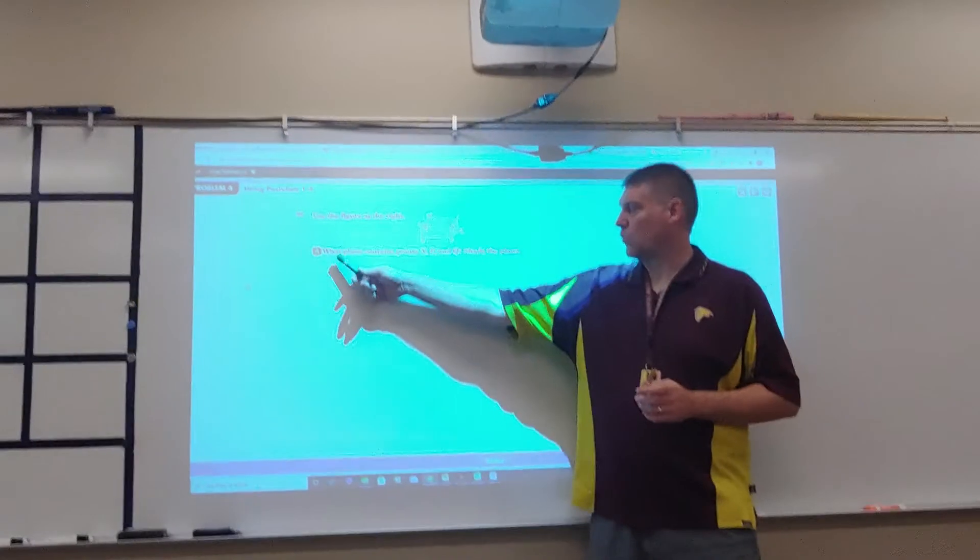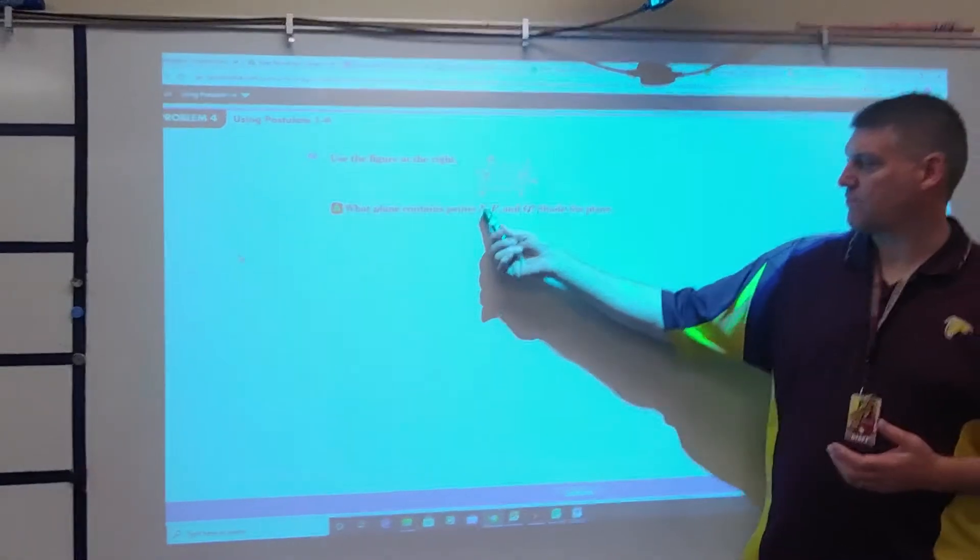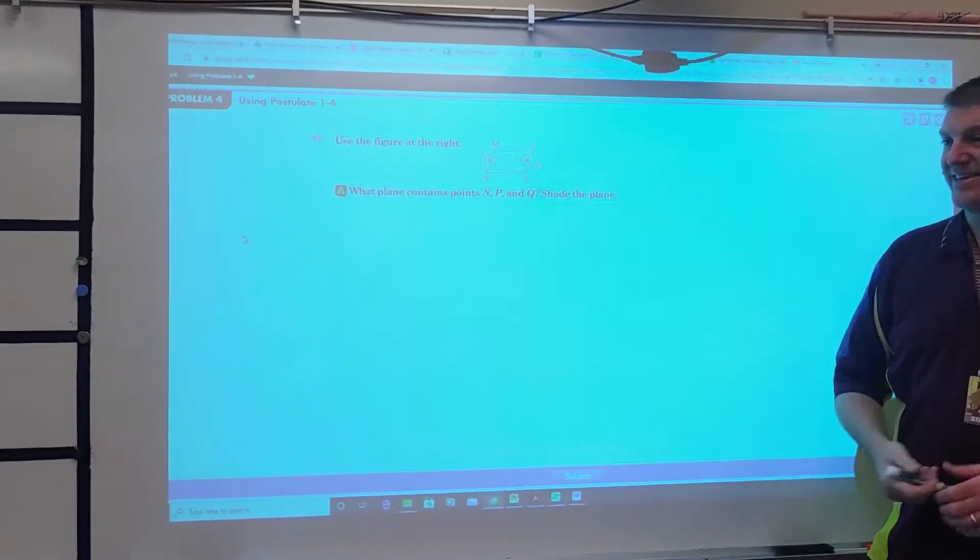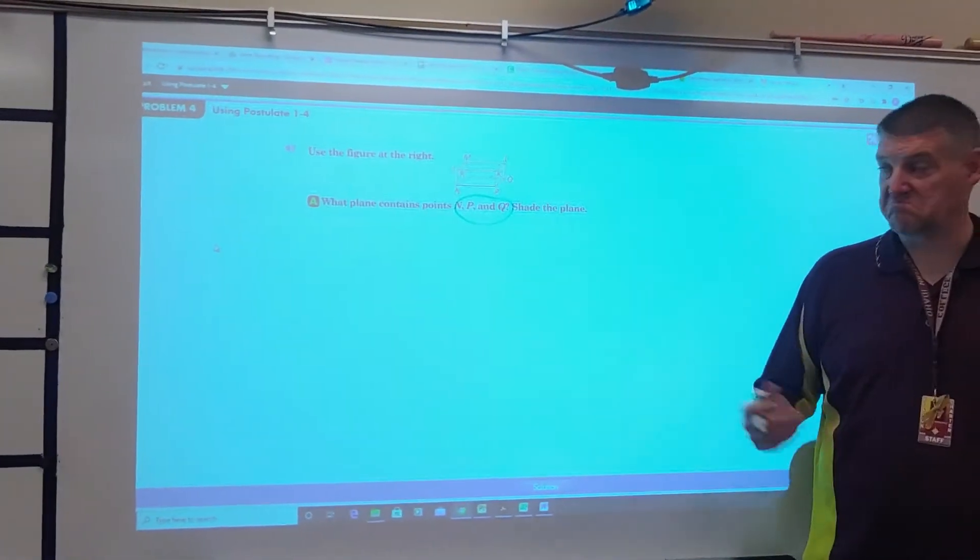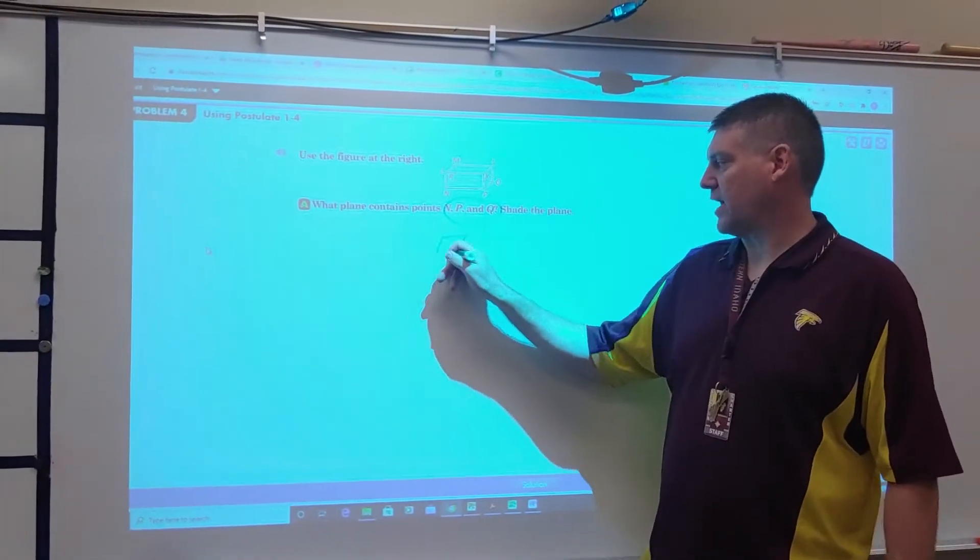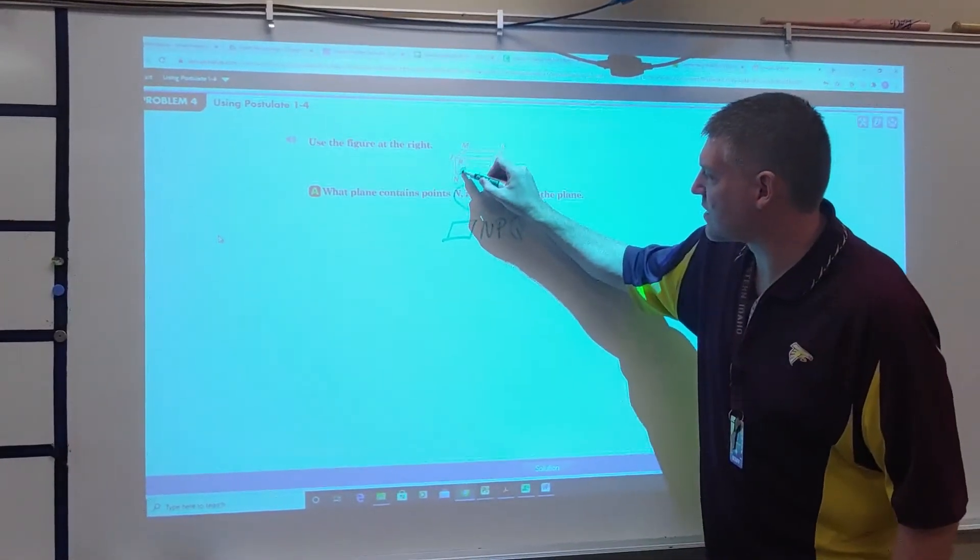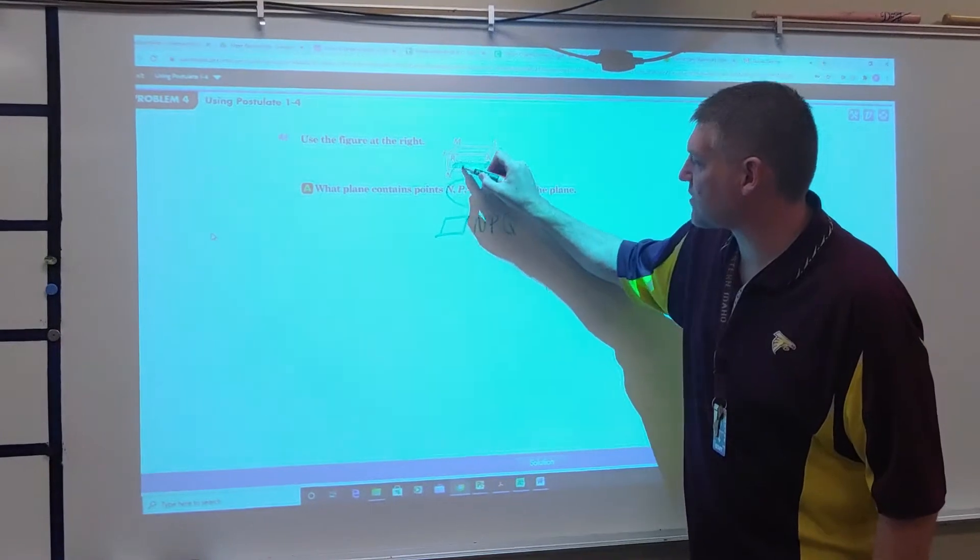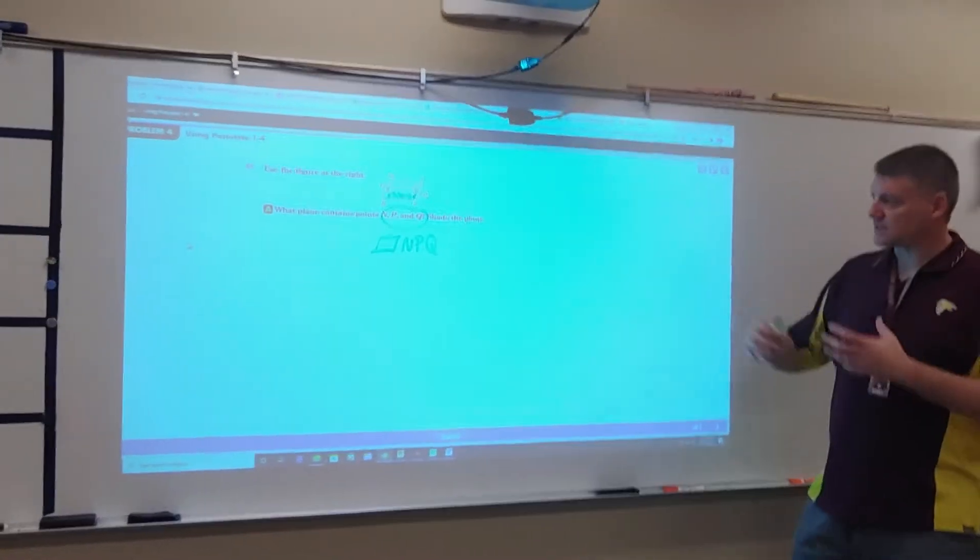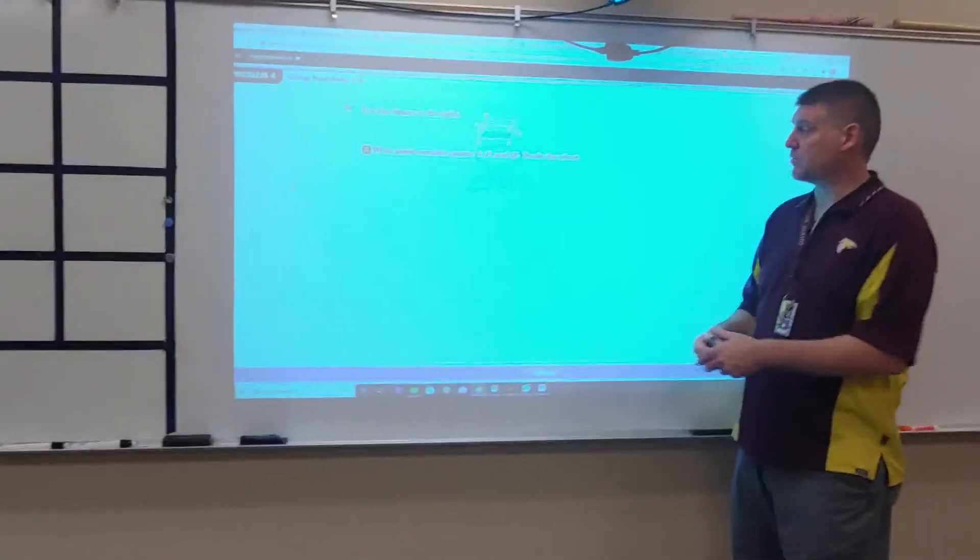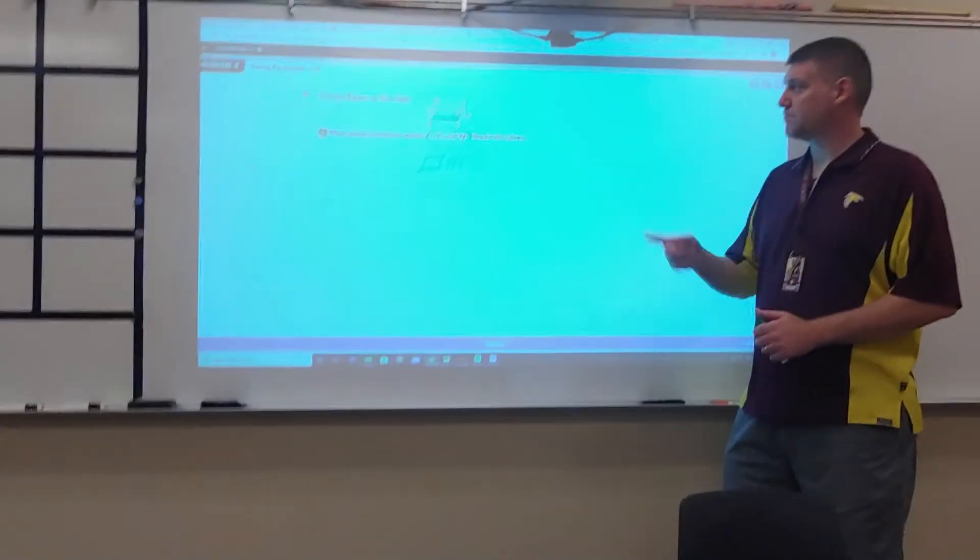Use the figure at right. What plane contains points NPQ? I have points NPQ. The nice thing is, they gave you the plane. Are these three non-collinear points? Yes, they are. So I would say plane NPQ. I'm going to shade it, that bottom piece right there of that diagram. You should be able to name planes by taking three letters and naming it.